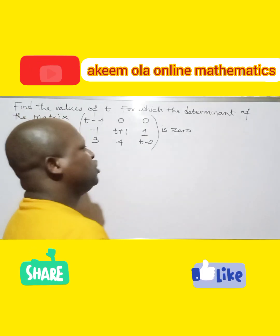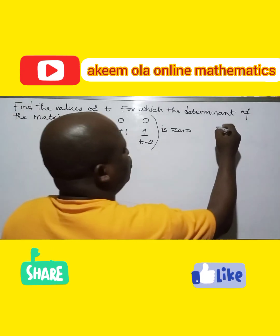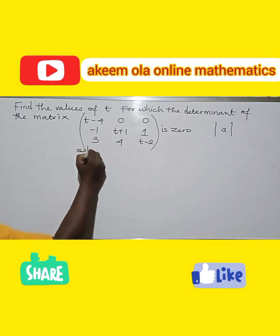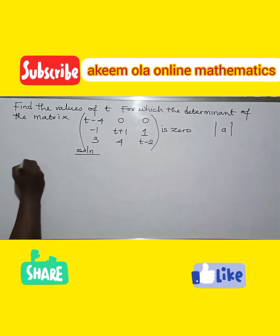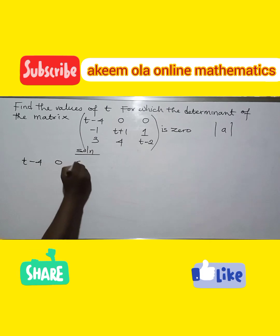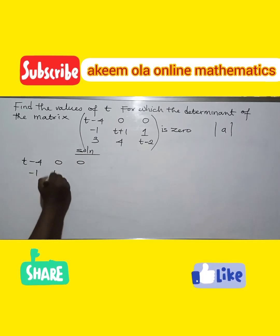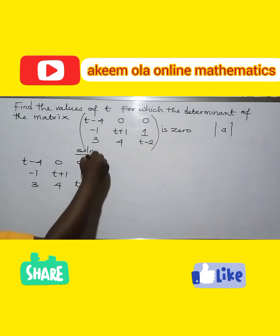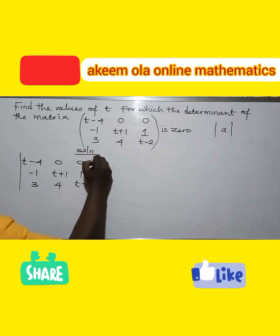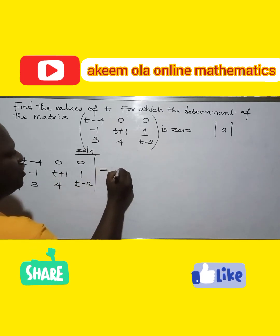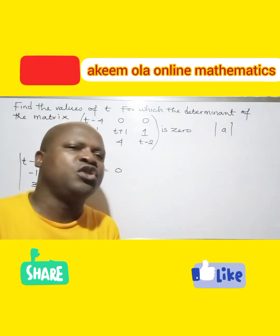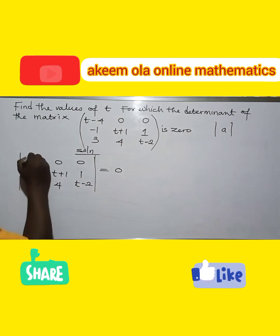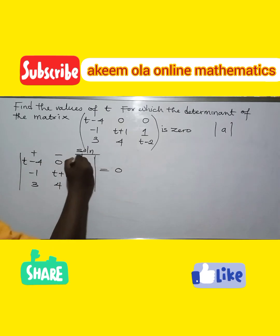Anytime you have to find the determinant of anything, we need to represent it enclosed in absolute value bars. So we need to find the determinant — we have t minus 4, 0, 0 in the first row; minus 1, t plus 1, 1 in the second row; and 3, 4, t minus 2 in the third row. Everything is equal to zero. We have to put into consideration the plus-minus-plus sign pattern.